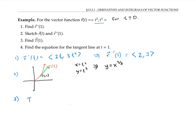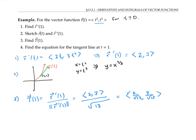To find the unit tangent vector here, we just take r prime and divide by its magnitude. So that's the vector (2, 3) divided by the square root of 13. Finally, to find the equation of the tangent line, we use the fact that the line goes through the point (1, 1). We can write the equation for that line parametrically as x equals one plus two t, y equals one plus three t, using the direction vector r prime of one, which is (2, 3).